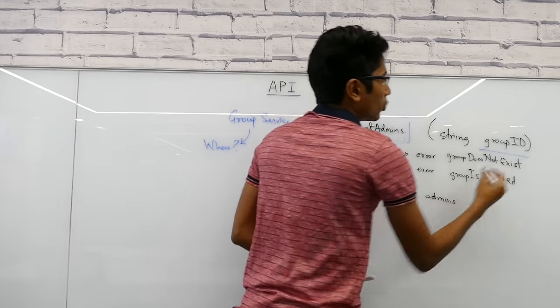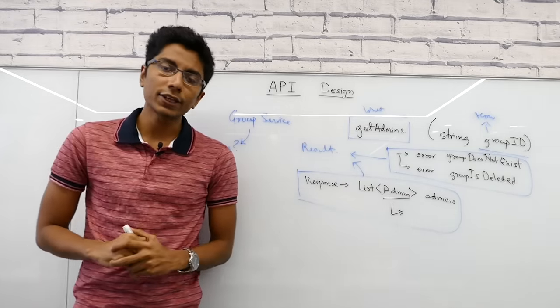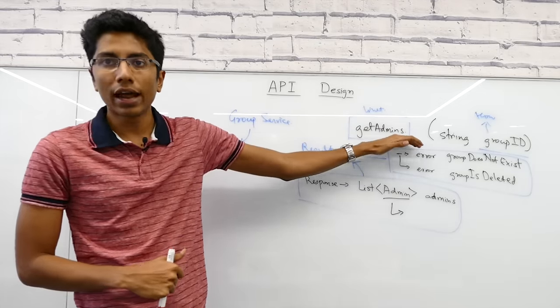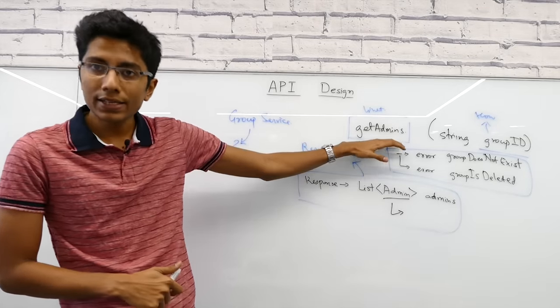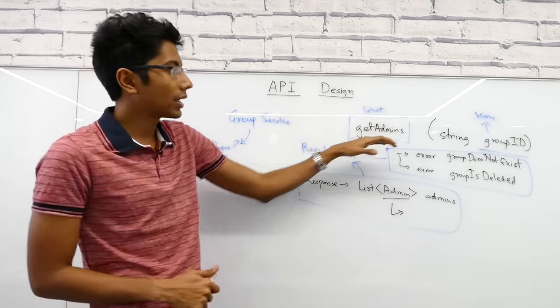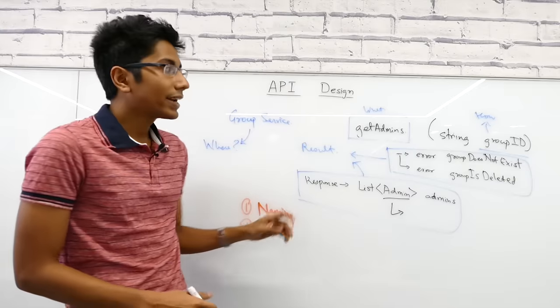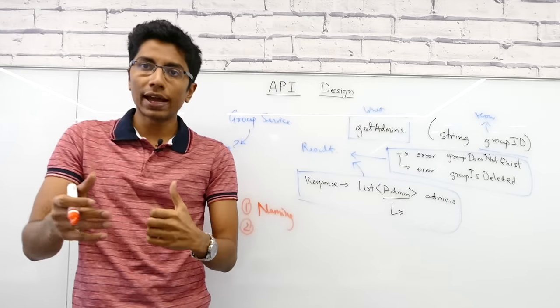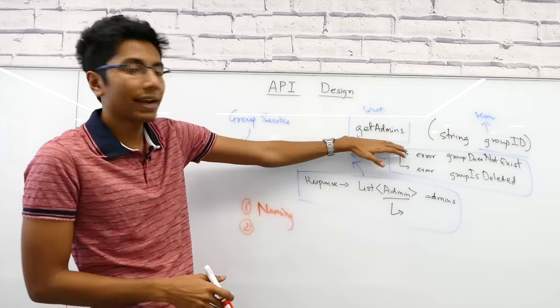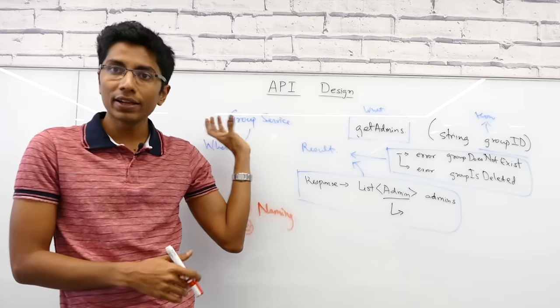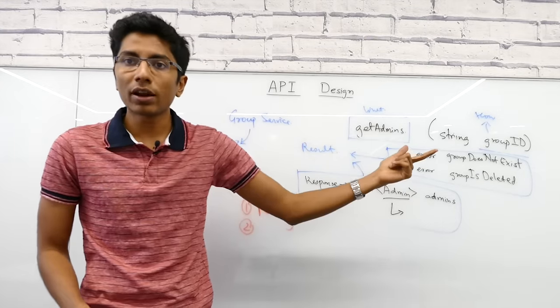What does it do? It gets the admins. That is the function name. What do I need to pass it? The group ID. There are a lot of mistakes that people make while designing APIs. The first thing is if you are saying get admins, then it should return admins. If it's returning more than admins, if it's returning the groups that they belong to, then that API is named wrongly.